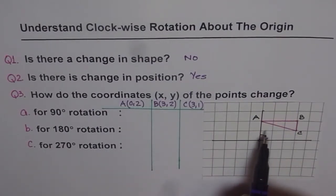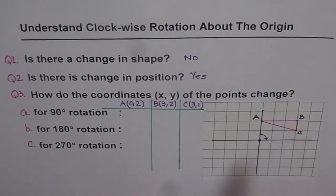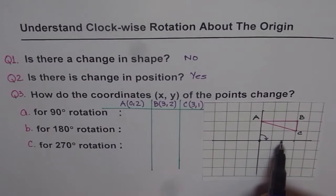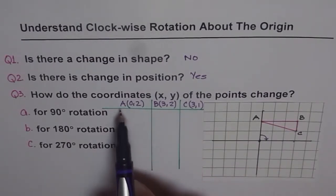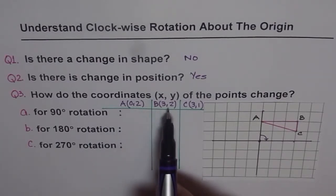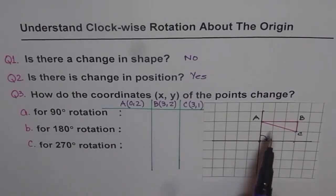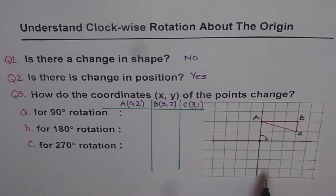We have a triangle with points A, B, and C. Point A is (0, 2), point B is (3, 2) where 3 is the x-value and 2 is the y-value, and point C is (3, 1) where 3 is the x-value and 1 is the y-value. So in coordinate form: A is (0, 2), B is (3, 2), and C is (3, 1). Now, if we do a 90 degrees rotation, what will be the image of this object and what are its coordinates?